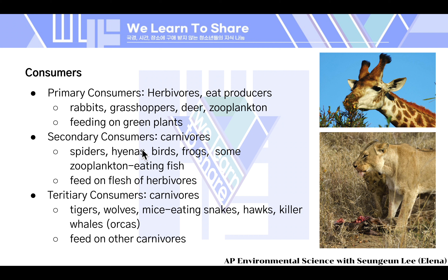Secondary consumers are higher than primary consumers. They are carnivores — animals that eat meat. Examples include spiders, hyenas, birds, frogs, and some zooplankton-eating fish. They feed on the flesh or meat of herbivores.